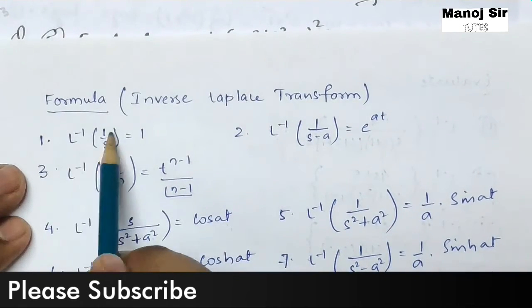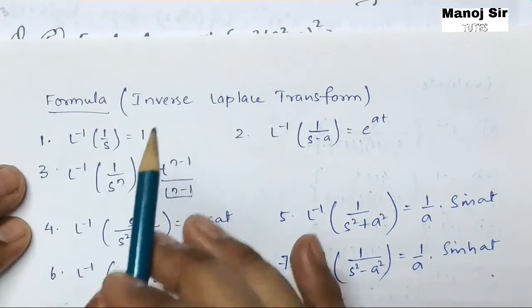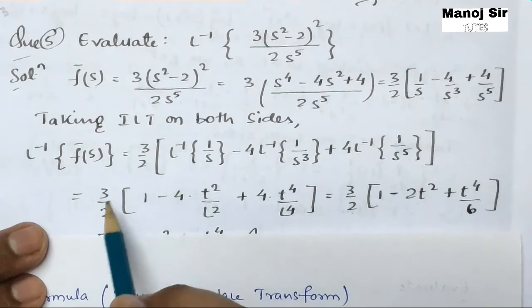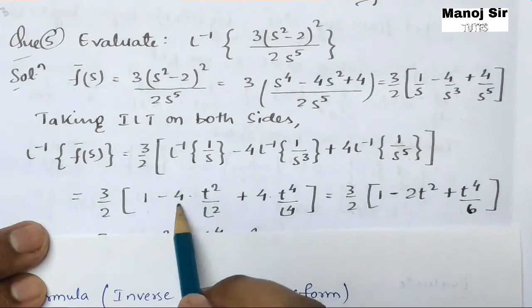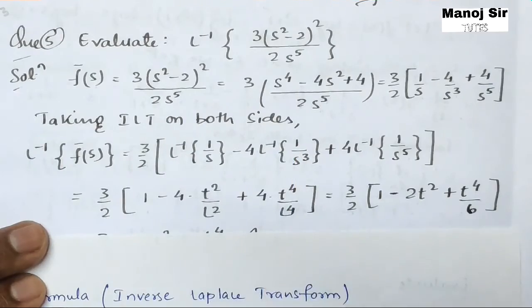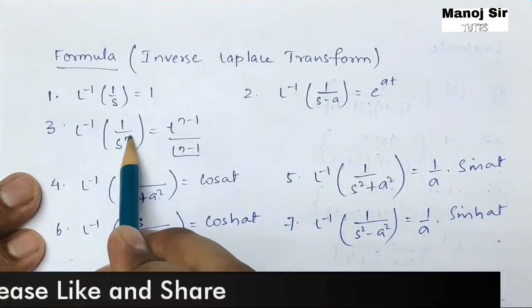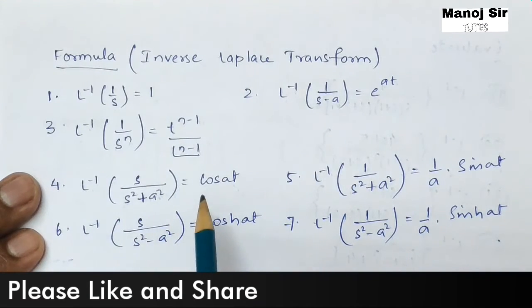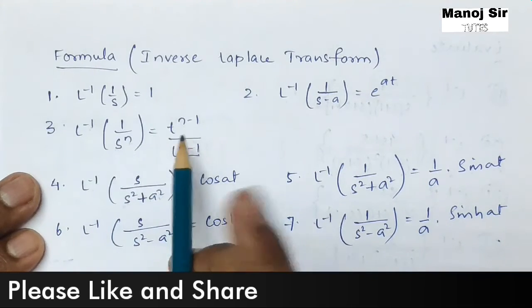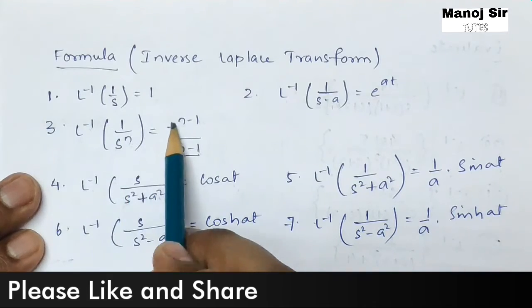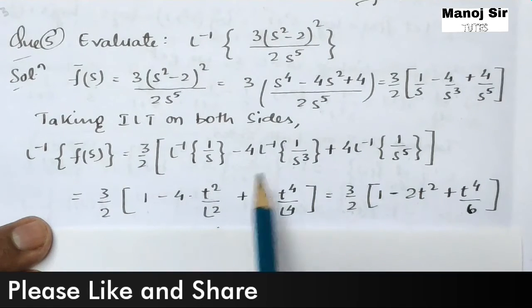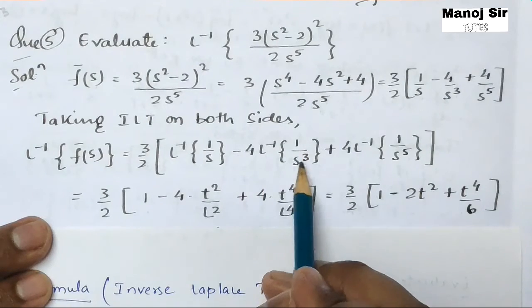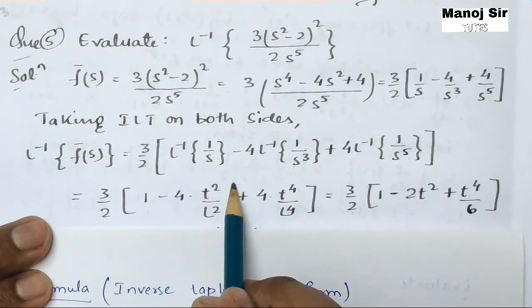The formula is: L⁻¹{1/sⁿ} = tⁿ⁻¹ / (n−1)!. This is a very important formula. L⁻¹{1/s} = 1. For L⁻¹{1/s³}, with n = 3, we get t^(3−1) / (3−1)! = t² / 2! = t² / 2.